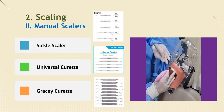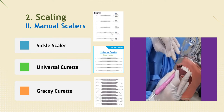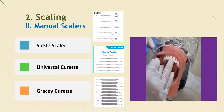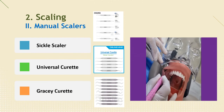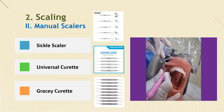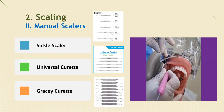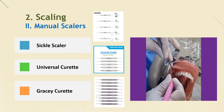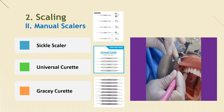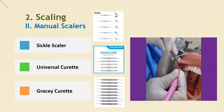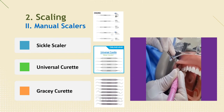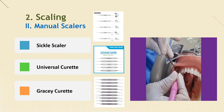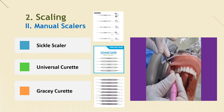The Gracey curette is a set of instruments that can be used for specific parts, and is designed for subgingival calculus removal and root planing. The inner side of the blade and the lower shank are inclined at 60 to 70 degrees, and only the cutting edges of the blade can be used. The blade is inclined on two sides; the tip and the cutting edges of the inclined side should be used. Next, let's watch the video on how to use the manual scaler.